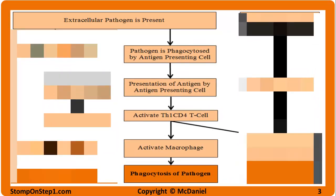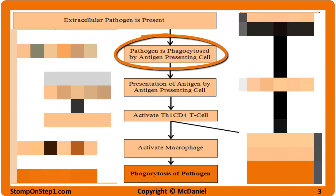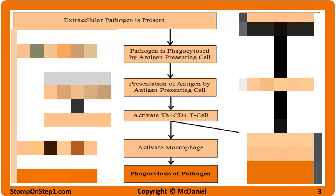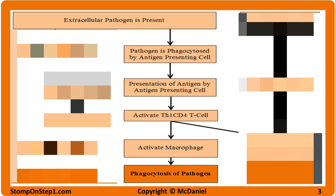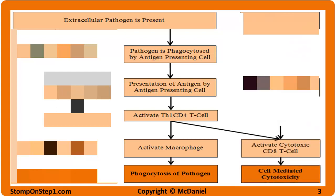Th1 T cells are also going to fight against extracellular pathogens. This starts when an antigen presenting cell, like a macrophage or a dendritic cell, phagocytoses the extracellular pathogen. It chews it up into fragments and then presents a fragment of that pathogen on its MHC surface molecules as an antigen. This attracts a Th1 CD4 T cell. That interaction activates the T cell, causing it to proliferate and release cytokines. Once the helper T cell is active, it primarily functions by activating other cells — turning on macrophages to phagocytose the extracellular pathogen, as well as helping to activate CD8 cytotoxic T cells.